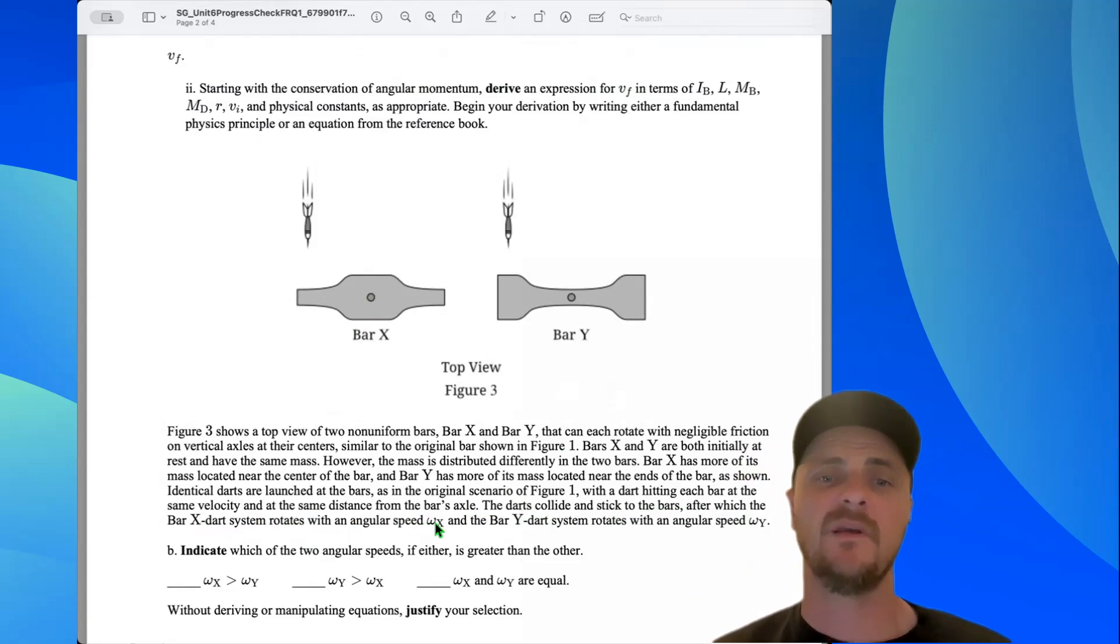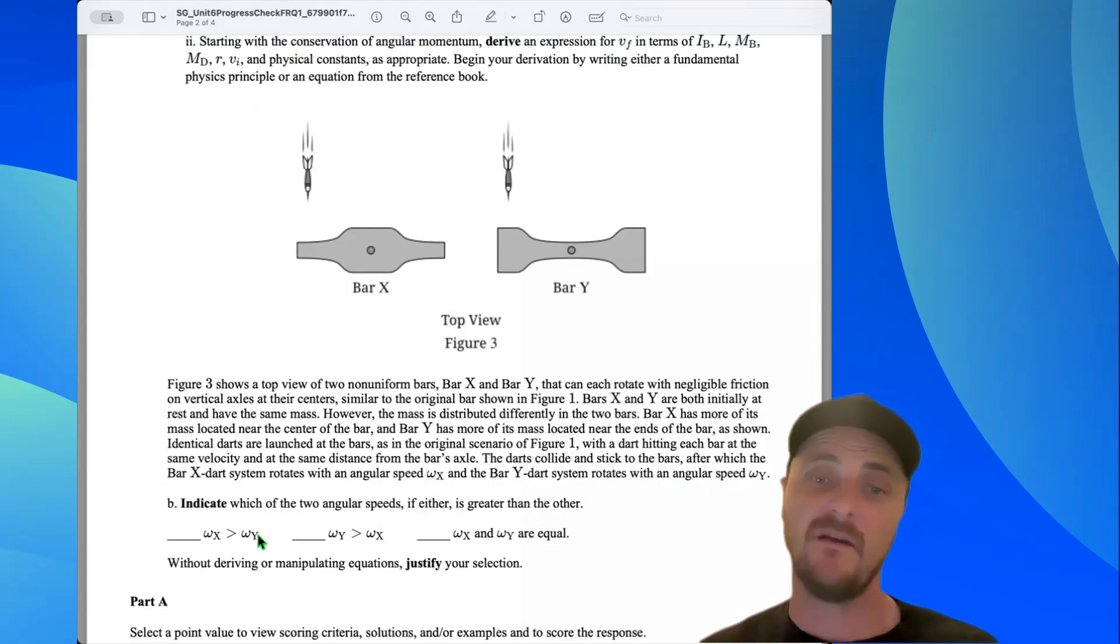Part B: Indicate which of the two angular speeds, if either, is greater than the other. And the answer is this one. This is definitely a bigger angular velocity than Y's angular velocity. And remember, for this explanation, we can't derive or manipulate equations.